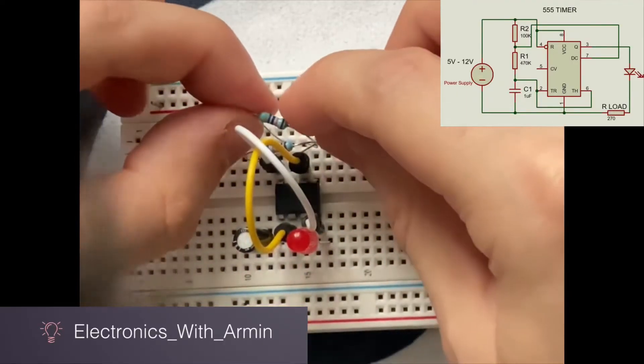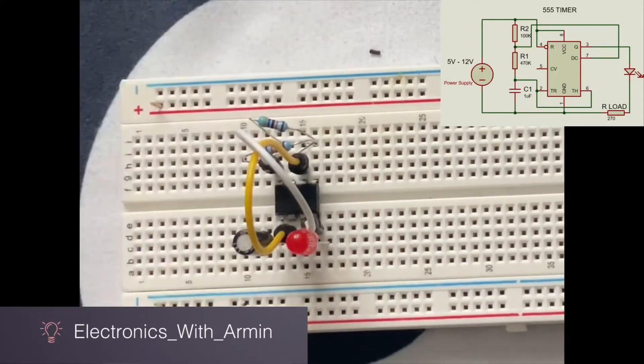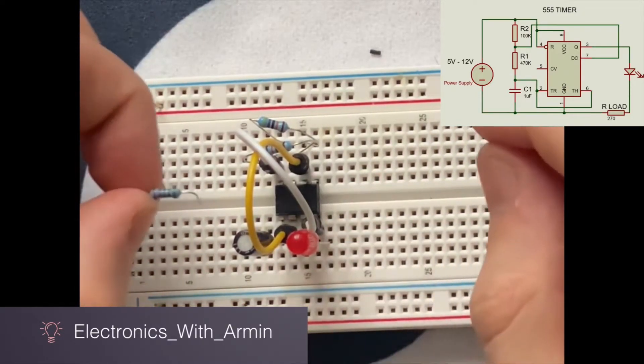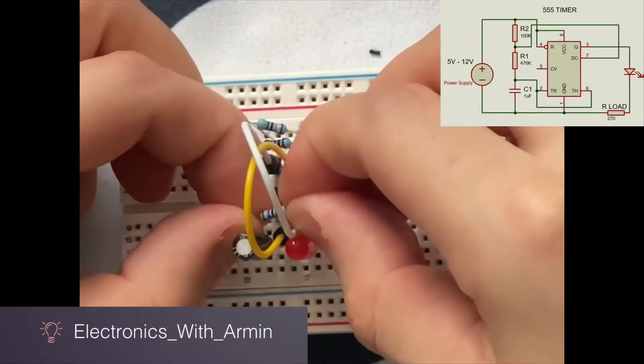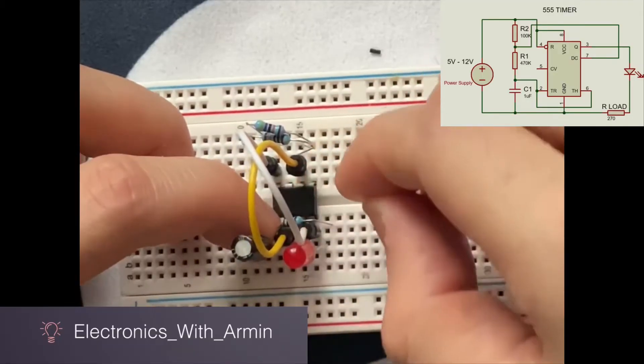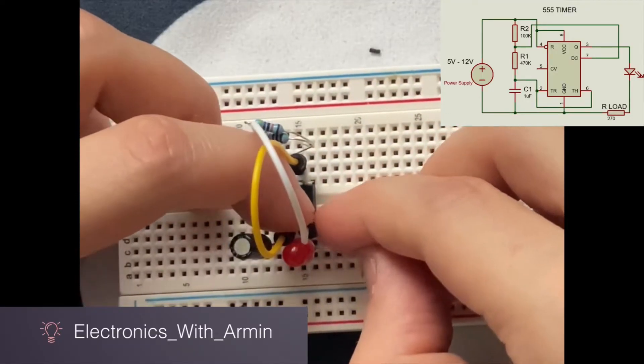And the last part, the load resistor, according to the diagram it has to be connected one side to pin 1 and another side to the cathode of the LED. First of all, I'm going to connect it to pin 1, and the other side is going to be connected to the cathode of the LED, also the minus part.